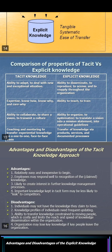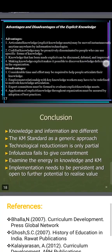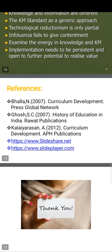This is the comparison of explicit and tacit knowledge — advantages and disadvantages. The advantages include being relatively easy to share; employees may respond well to recognition of their knowledge. The disadvantage is that individuals may not have the knowledge they claim to have. In conclusion, knowledge and information are different. Knowledge management stands as a generic approach; technological solutions are only partial. Implementation needs to be precise and open to further potential. Thank you all.